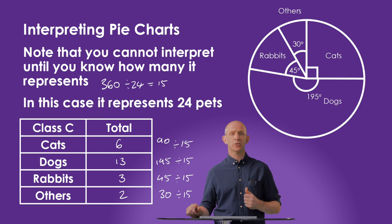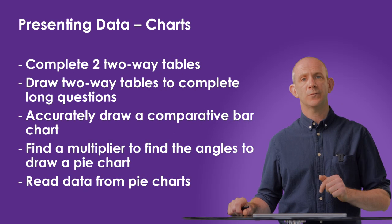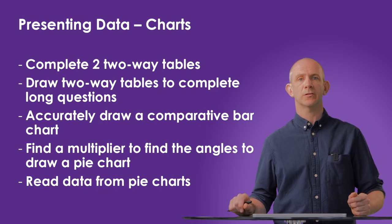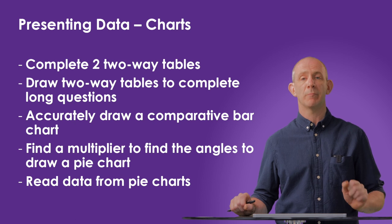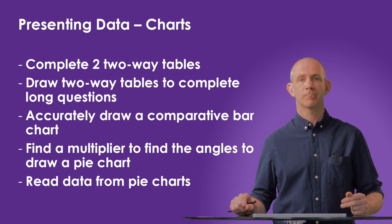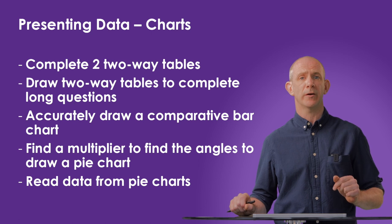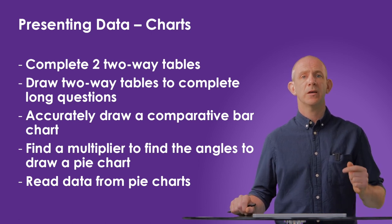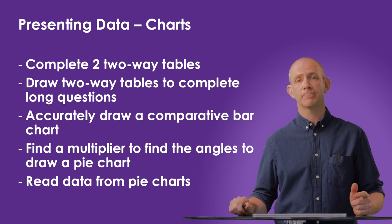We can now compare this to the previous pie chart to state the differences in categories — which is higher, which is lower — and make these recommendations. In this video we looked at organizing data into a two-way table, drawing accurate bar charts and comparative bar charts, remembering scale, labels, and clear bars. We looked at calculating degrees per unit of data to find angles in pie charts, and how to interpret data from a pie chart. In the next video we'll be looking at different types of averages and the range.